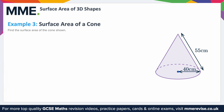Example 3: surface area of a cone. Find the surface area of the cone shown. Recall that the formula for the surface area of a cone is πr² + πrl, where πr² is the area of the circle on the bottom and πrl is the rest of the cone. We can sub in everything we know: the radius is 40 and the slant height is 55. So it's π × 40² + π × 40 × 55.